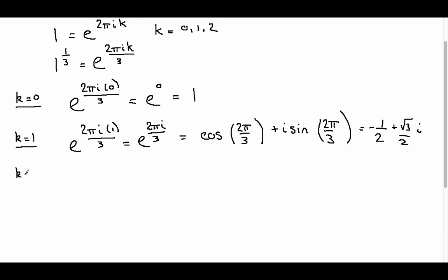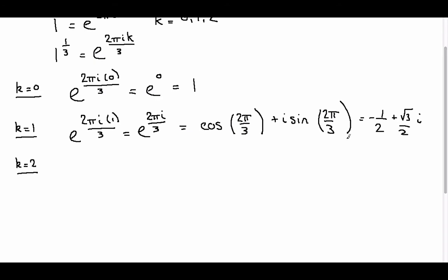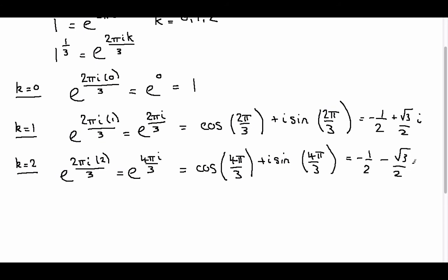And we get a third solution. Our second solution we may not have been expecting is when k is equal to 2. We get e to the 2 pi i k times 2 over 3, which is e to the 4 pi i over 3, which we can write as cos of 4 pi over 3 plus i sin 4 pi over 3. And that is equal to minus 1 half minus root 3 over 2 i.